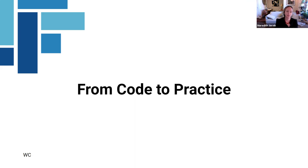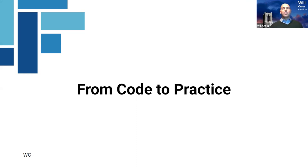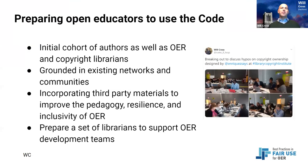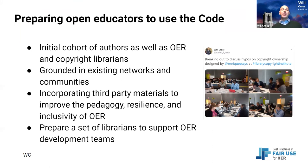I'm going to introduce my colleague Will Cross to talk about the implementation project funded by the Institute for Museum and Library Services — how we can take the code and move it from a document into part of different practice communities' work. We built the code as a way to do things, and now we finally get to start making things. There are three aspects to the work we're doing with the generous support from IMLS, and then we have a special guest who will talk about one example.